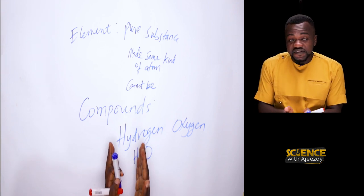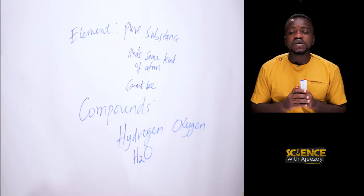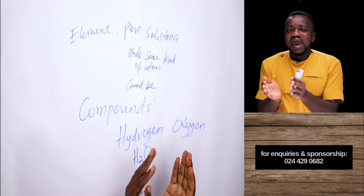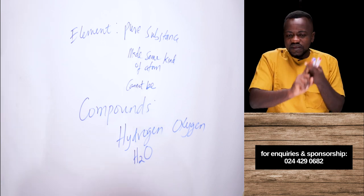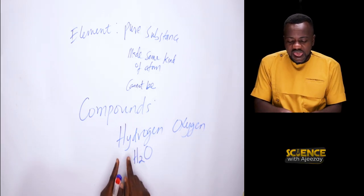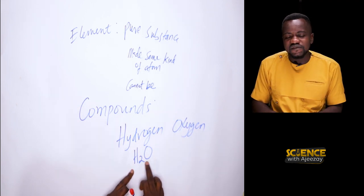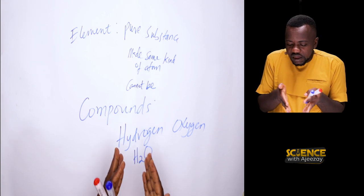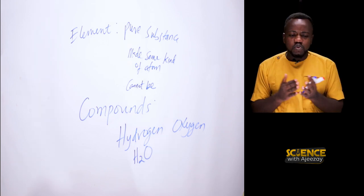You can look at the state of hydrogen, you can look at the state of oxygen, and then the state of the product formed. One thing you should also bear in mind for compounds is that the products formed are always different from the constituents that came together to form them. Hydrogen is a gas, oxygen is a gas — they came together chemically and gave us H2O, which is water, a liquid. So the individual elements that come together to form the compound don't look like the products.